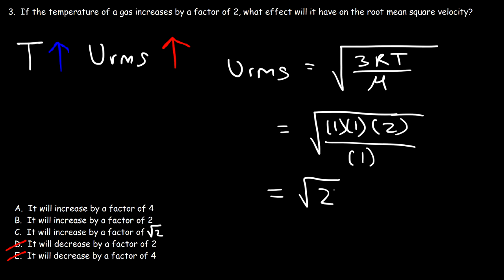If you triple the temperature, the root mean square velocity increases by a factor of the square root of 3. If you quadruple the temperature, the square root of 4 is 2, so the root mean square velocity doubles. If you increase the temperature by a factor of 9, the velocity triples; by a factor of 16, it increases by 4. You simply take the square root of the temperature change factor. So in this problem, C is the right answer.